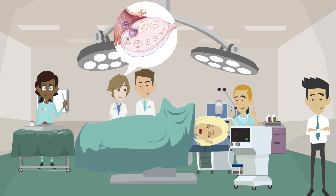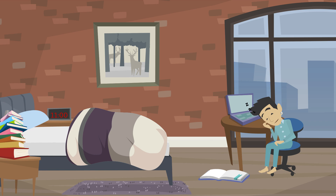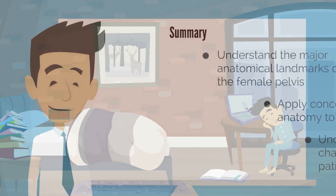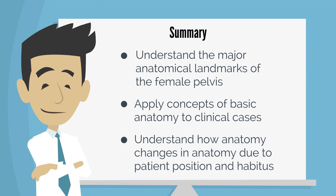You are right! And remember, the ovary has two layers. The outer cortex is where follicular development occurs, and a single layer of mesothelial cells covers this cortex as a surface epithelium. The inner medulla consists of fibromuscular tissue and blood vessels. I am so glad I reviewed anatomy before the rotation started. This concludes this APCO Basic Science Objective video about pelvic anatomy. You should be able to understand the major anatomical landmarks of the female pelvis, apply concepts of basic anatomy to clinical cases, and understand how anatomy changes due to patient position and habitus. Thanks for watching!